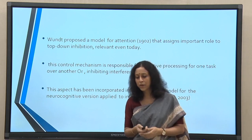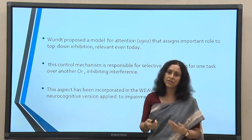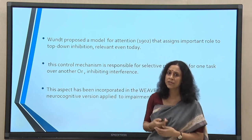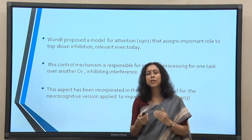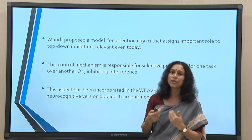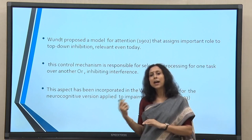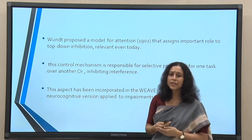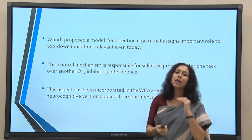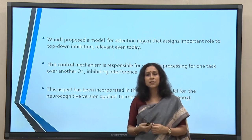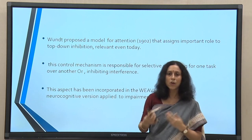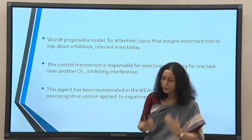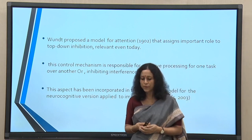In a cocktail party, at any given point we try to pay attention to what the other person is saying and try to inhibit other incoming conversational input from around us, even though it is perfectly audible. This needs a control mechanism at a higher level of processing. This is what we refer to as inhibiting interference — which can be not only auditory signal but also visual, which we try to inhibit to pay closer attention to whatever is relevant at that given moment.